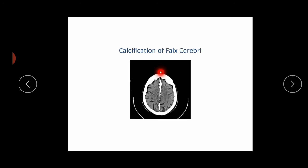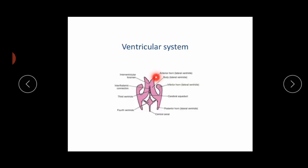This is the ventricular system. We can see the anterior horn, the interventricular foramen, and the interthalamic connection. This is the third ventricle, the fourth ventricle, the central canal, the posterior horn, and the cerebral aqueduct.